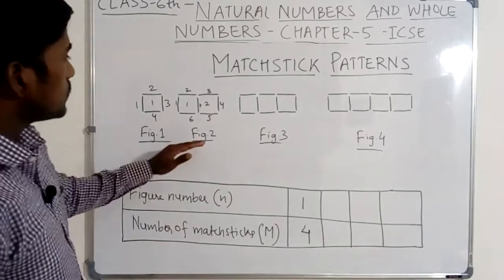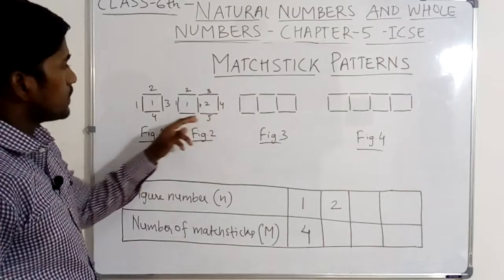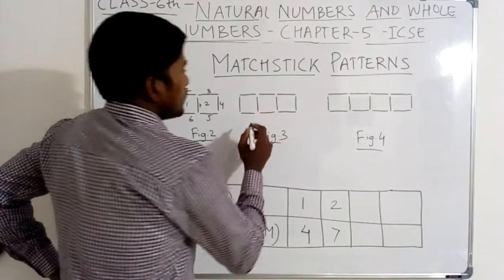In figure number 2, mastic used — one, two, three, four, five, six, seven. Seven numbers of mastic. In figure number 3, let's count how many squares: one, two, three.